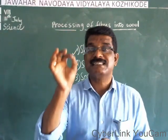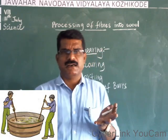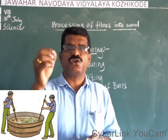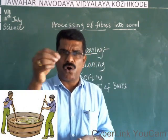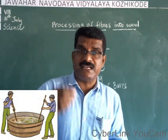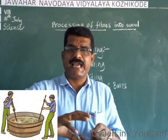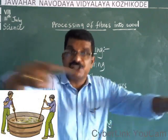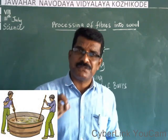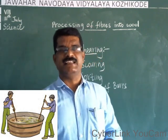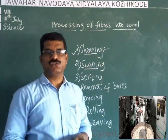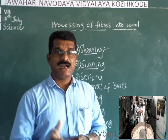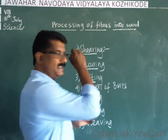The second step is scouring. The fleece obtained after shearing may contain a lot of dust, greasy material, and oily material. Therefore the sheared fleece needs to be washed properly with a soap solution. This process of cleaning the sheared fleece in a tank by using soap solution to remove dirt, greasy particles, and oily material is known as scouring. Simply put, scouring is a method of cleaning the sheared fleece.